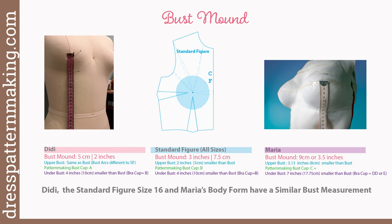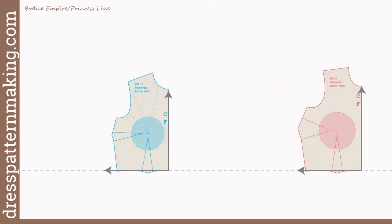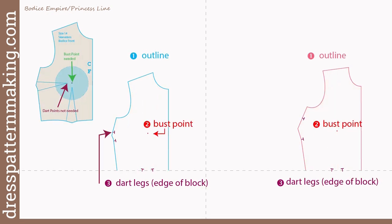The under bust measurement and upper bust measurement — together with the bust arcs and bust mound — give a complete picture. For the standard figure the bust mound is three inches but the under bust is four inches smaller than the bust. My bust mound is three and a half inches, but my under bust is seven inches smaller than my bust. Use what your tape measure says — don't get hung up on the numbers.